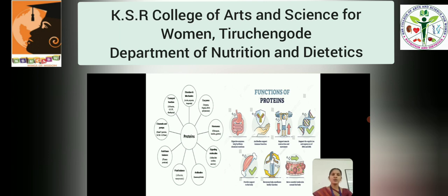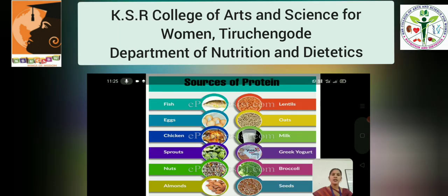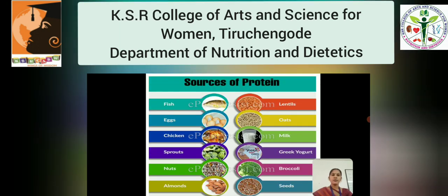The sources of protein include fish, eggs, chicken, sprouts, nuts, almonds, lentils, milk, broccoli, seeds, and more. Thank you.